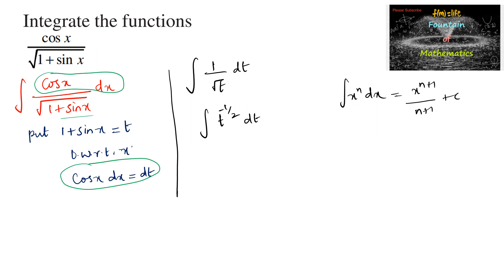We can write integral t power minus 1 by 2 is equal to t power minus 1 by 2 plus 1 upon minus 1 by 2 plus 1 plus c. Or we can write t to the power of 1 by 2 divided by 1 by 2 plus c, or 2 times t power 1 by 2.